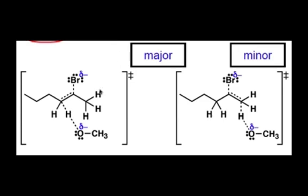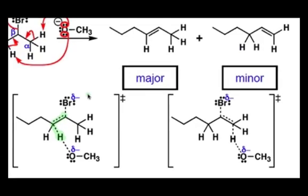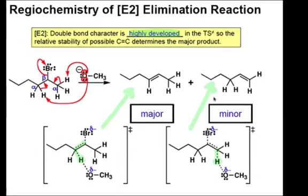You can see here that deprotonation of this hydrogen leads to the more substituted double bond, and as a result, that product will be the major product. This transition state will be accessed more quickly than that of the minor product, in which one of these methyl hydrogens is taken off by the base, leading to only a monosubstituted double bond.